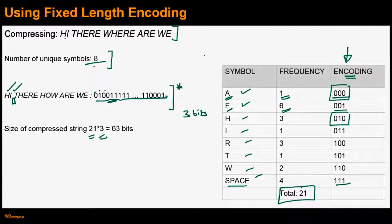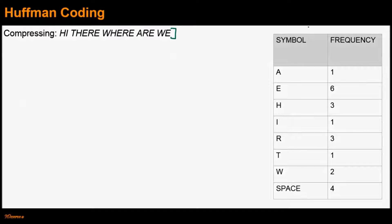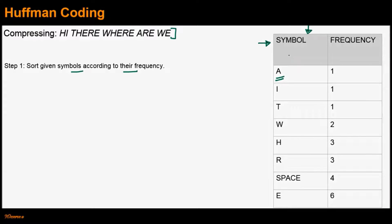Now let's use the Huffman coding algorithm for compressing the same input and see how it minimizes the length of the bit stream. The first step of the Huffman coding algorithm is to sort the given symbols according to their frequency. Symbol A has the least frequency of 1, and symbol E has the most frequency of 6, because E occurs 6 times in the given input. The first step of sorting is now complete.